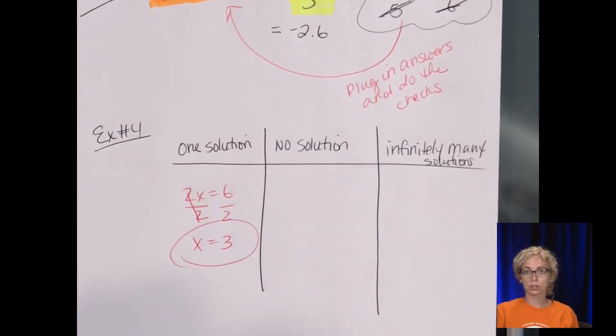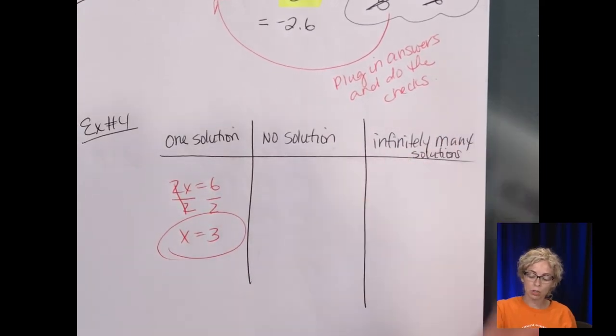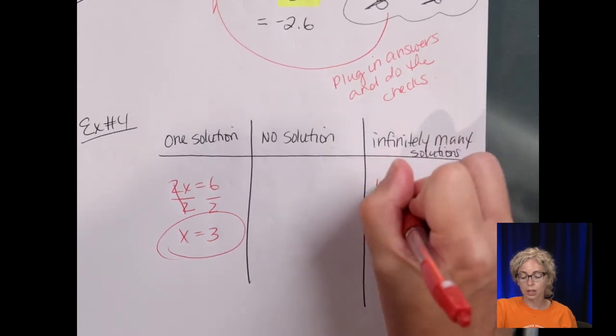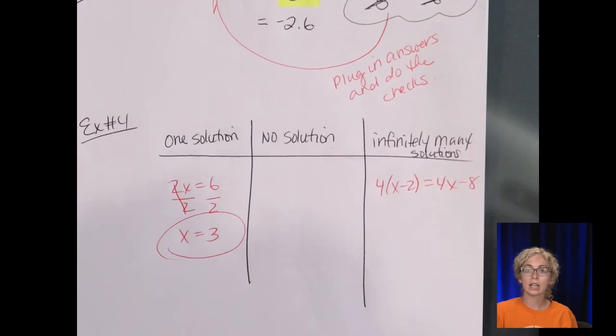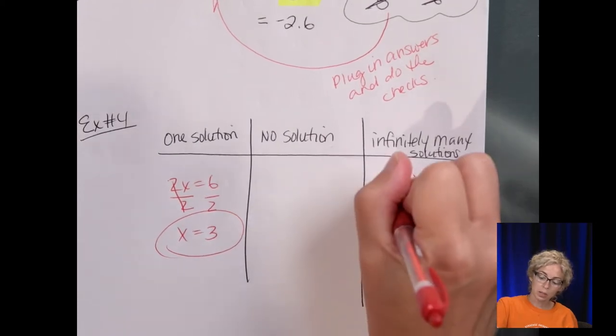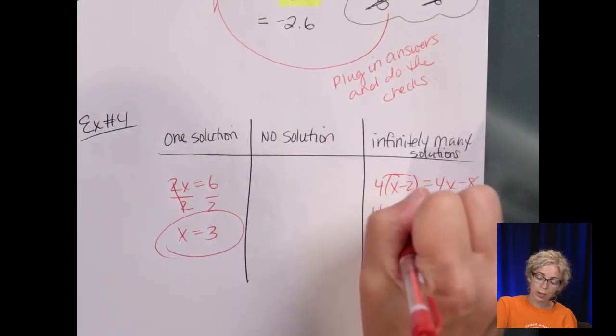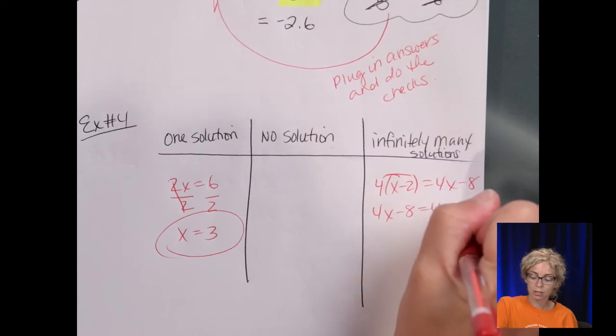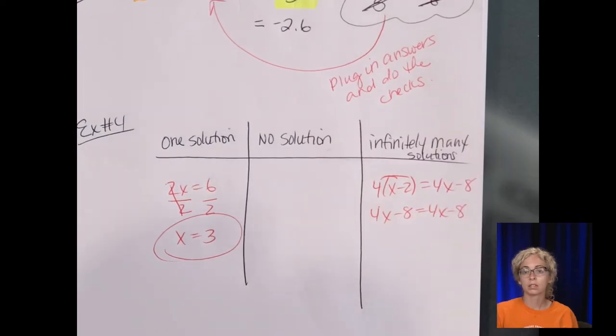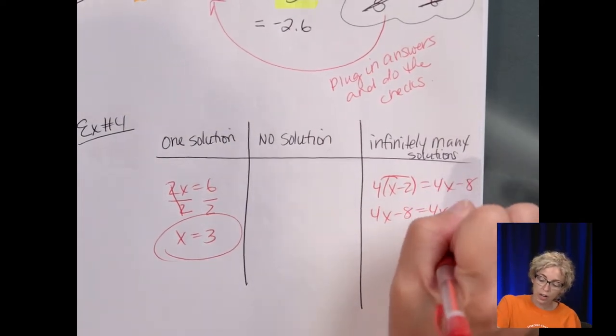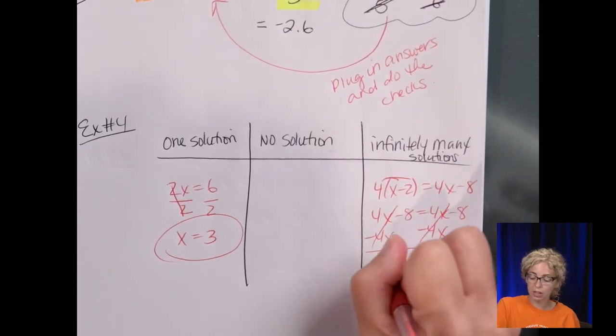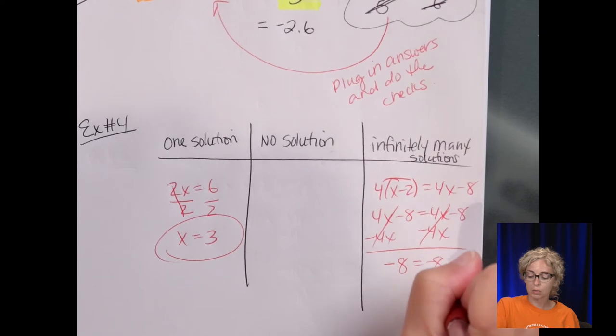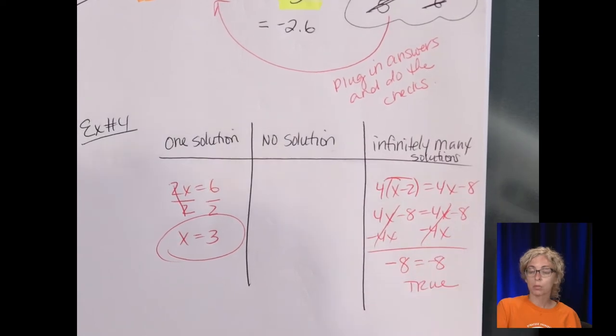Now, infinitely many solutions, it might look like 4(x - 2) = 4x - 8. And that's because when you distribute, you get 4x - 8. And it's equivalent. So if I essentially solve for x by subtracting the x's, they cancel on both sides, and I'm left with -8 = -8, which is true.